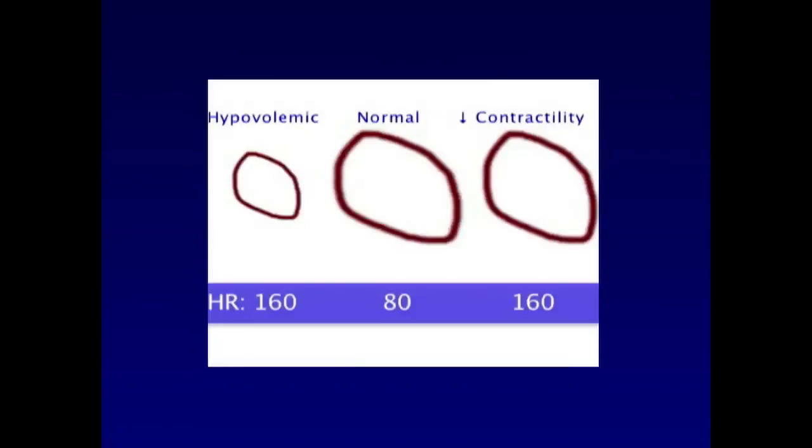This increase in heart rate that you see is in response to hypovolemia on the left-hand side, meaning the heart is too small, or to a decreased ability of the heart to pump on the right. So with a normal cardiac picture or heart picture, you can get the same output at a lower heart rate. But if your heart's sick, as it is on the right, or if your heart doesn't have enough fluid on the left, you'll have a faster heart rate. Next slide, please.